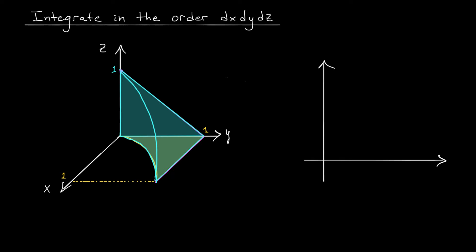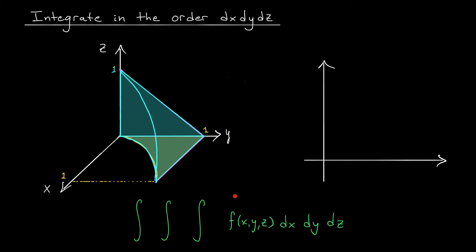Initially we had a triple integral in the form dz dy dx, but now we want to change the order and rebuild it as dx dy dz. We'll end up with an integral of f(x,y,z) first with respect to x, then with respect to y, then with respect to z on the outside — we just need to figure out the bounds. We're going to perform the process from the last step in reverse: instead of starting with outer integrals and working inward, we find the bounds for our inner integral and work our way back out.